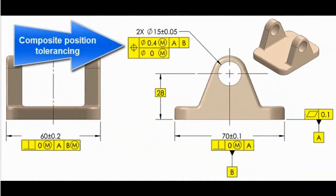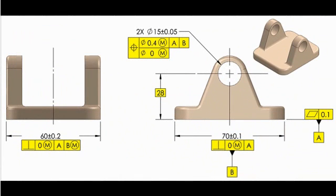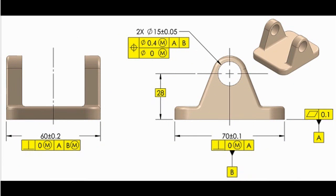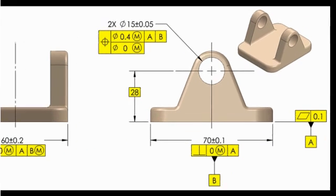Composite position tolerancing is used when you want to control the features of a pattern tighter to one another than to the datum reference frame. In this case, we have two holes that are shown coaxial on the drawing and we'd like to keep them coaxial.